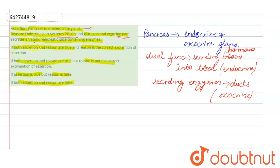This was the discussion of the given assertion and reason. When we talk in context of the question, the endocrine part secretes insulin and glucagon, which is correct. And when we talk about the exocrine part, the reason says it secretes acidic pancreatic juice. However, the correct answer is that it is alkaline — the pancreas secretes alkaline juice containing enzymes. In that case, the reason is false.